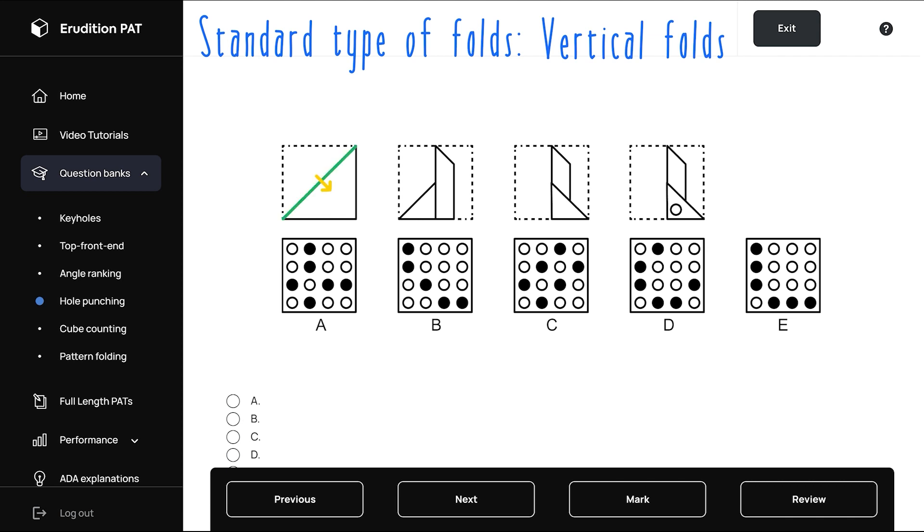First you have a diagonal fold in half, then it looks like it was folded here along this vertical axis. Finally it looks like it was folded the other way along this vertical axis.